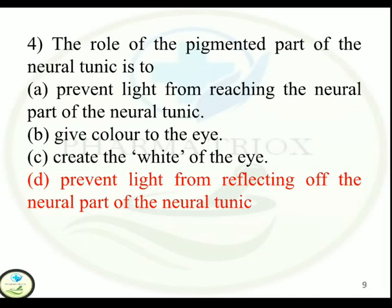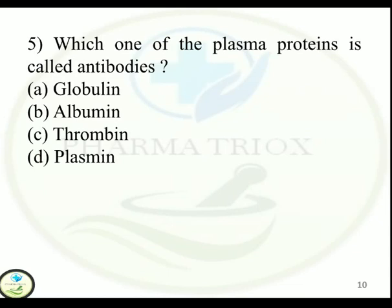Question 5: Which one of the plasma proteins is called antibodies? Option A: Globulin. Option B: Albumin. Option C: Thrombin. Option D: Plasmin. Correct answer is Option A — Globulin.